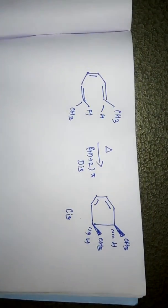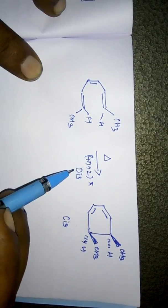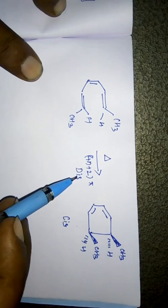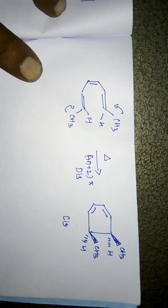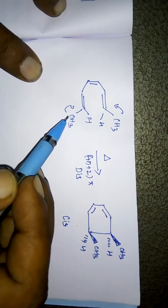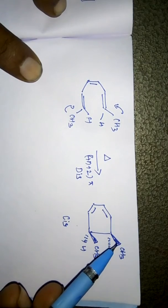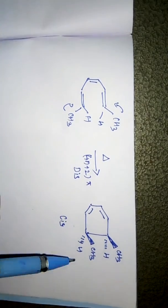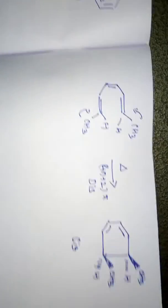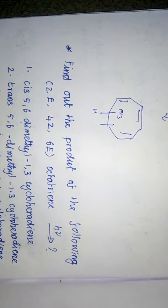Under thermal conditions, the same 4n+2 pi system undergoes disrotation. In disrotation, one carbon rotates clockwise and the other anticlockwise. Both methyl groups go up and both hydrogens go below the plane, giving the cis isomer. The answer for thermal conditions is cis-5,6-dimethyl-1,3-cyclohexadiene.